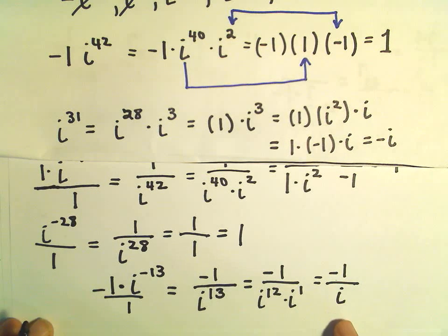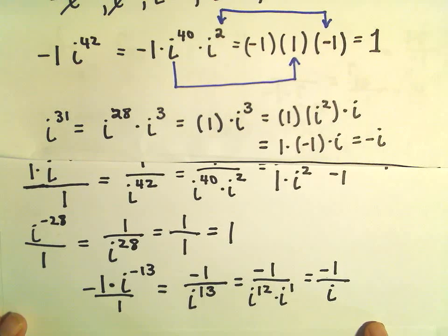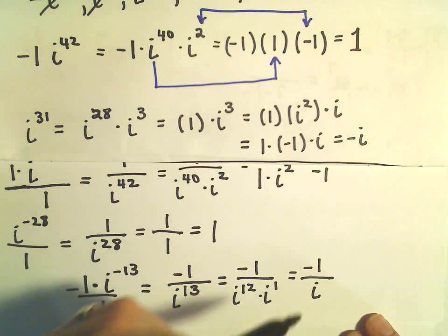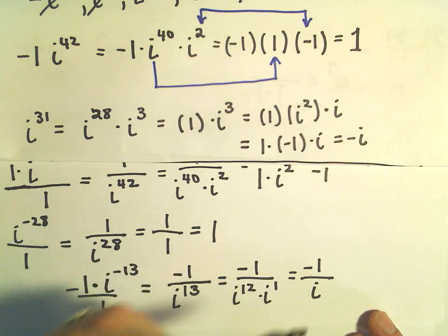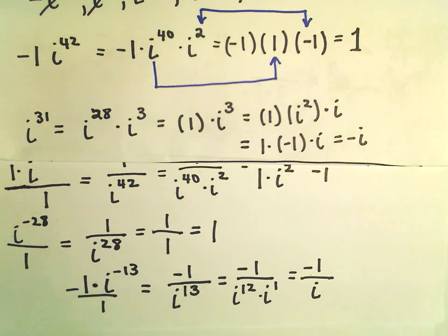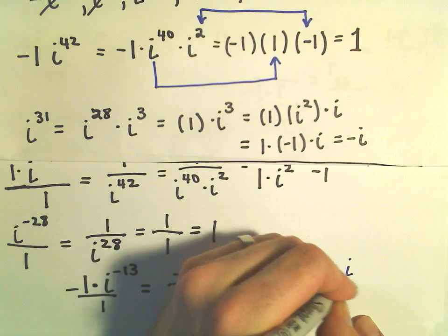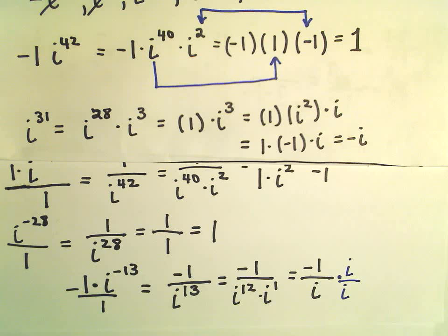And certainly this is valid. A lot of times though, people will try to write it so that you don't have i's in the denominator of a fraction. So in this case, what we can do is actually multiply the numerator by i and the denominator also by i.